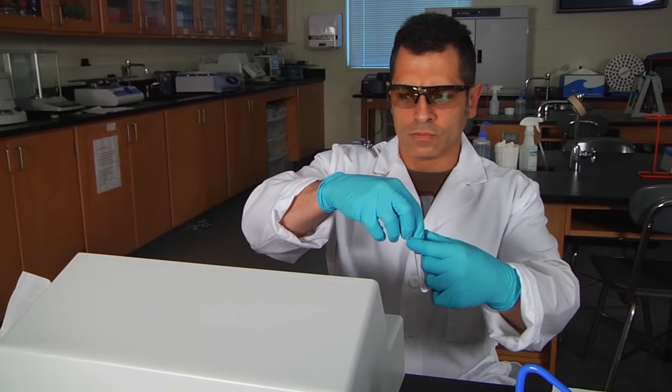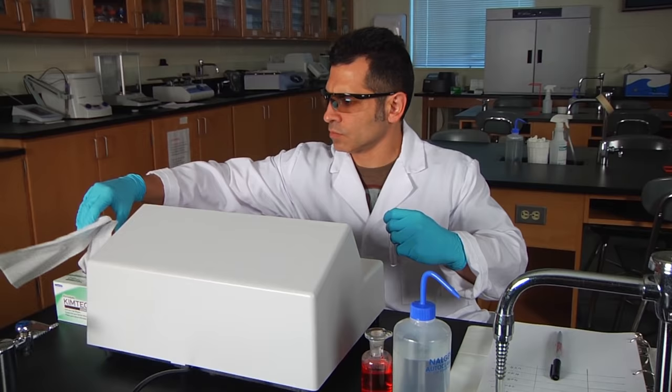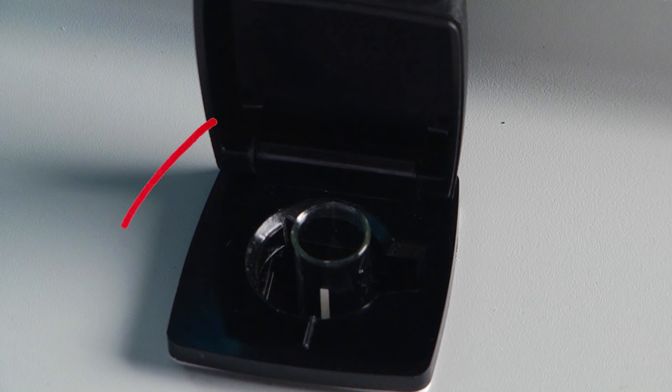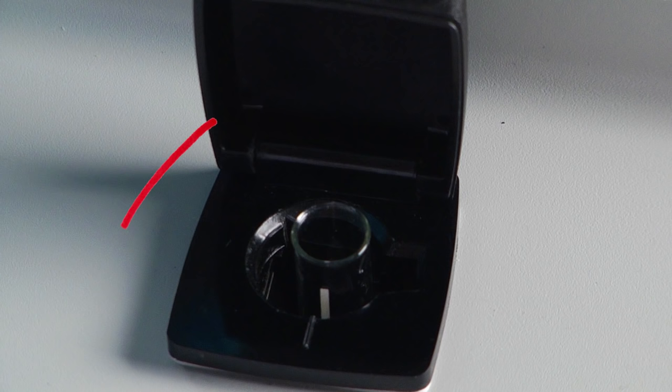There are two cuvettes. One contains only MilliQ water. This is our blank. Wipe the blank cuvette with a Kim wipe to remove any fingerprints and place the cuvette into the sample chamber by aligning the guide marks. Adjust the display to 100% transmittance.